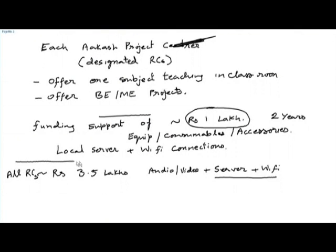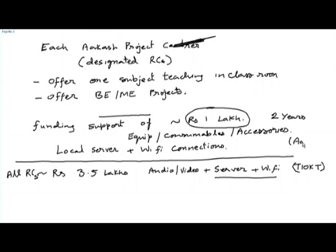Let us clearly demarcate between the two projects: the T10KT project and the Aakash project. The good news is that the T10KT project has been approved by the government, meaning the funding for this infrastructure will come automatically through that project. Therefore we would like to conserve the Aakash project funding to fulfil emerging needs.